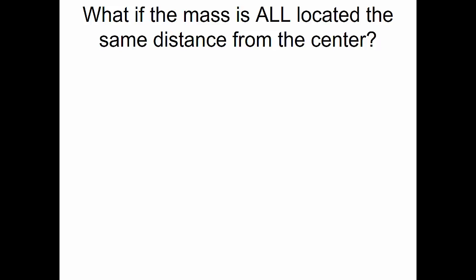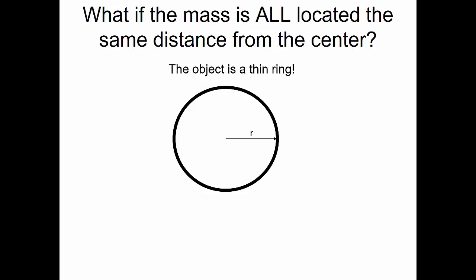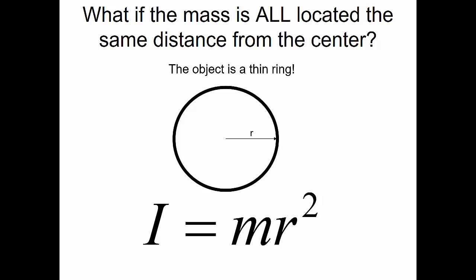What if the mass is all located the same distance from the center? For example, if there are so many masses collected at the same distance — like a thin ring — we can sum all the masses together and multiply by the radius. For a thin ring, the mass moment of inertia is equal to mass times radius squared.